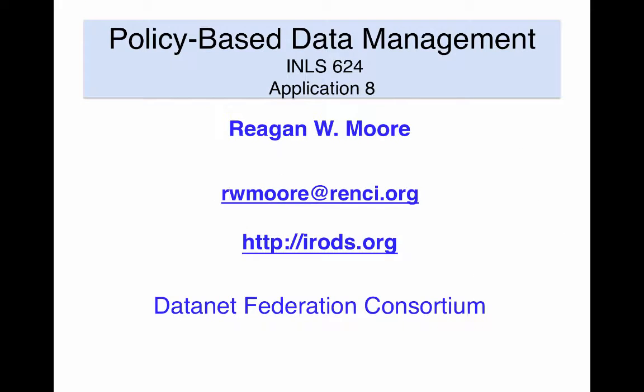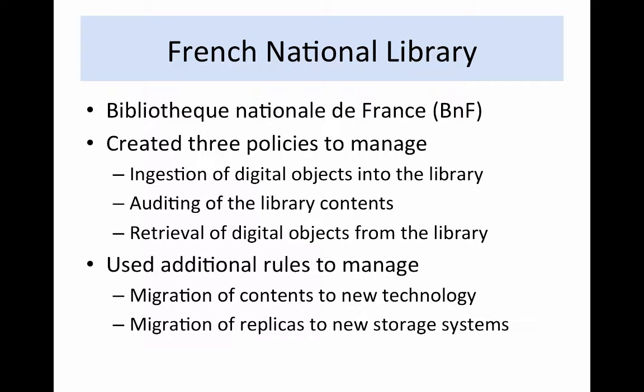The Bibliothèque Nationale de France (BNF) is the National Digital Library of France. The library contains 14 million books, and the digital library has 3 million documents. The French National Library uses the IRODS data grid to manage interactions with storage systems. They created three policies to manage ingestion, auditing, and retrieval — relatively sophisticated rules that attempt to cover all aspects of each task. We will look at simple versions of the three policies. Additional policies were created to help manage migration of the digital library onto new storage systems, moving the entire library off old technology to cheaper storage systems transparently to the user community. The policies included the migration of replicas to new storage systems, which could then be accessed in parallel with the original files.